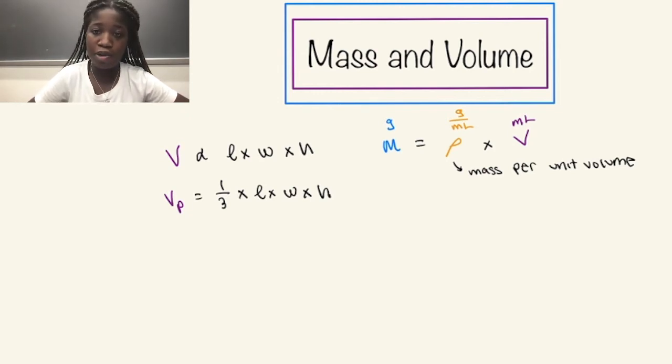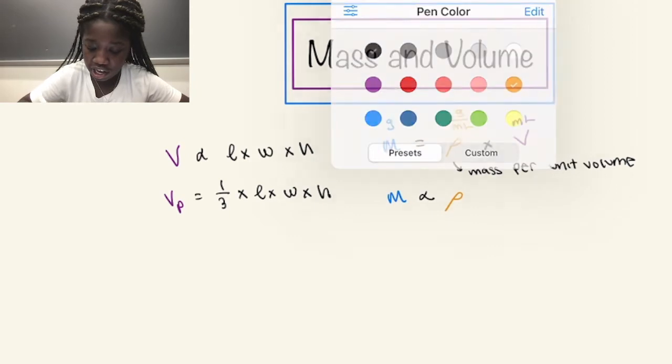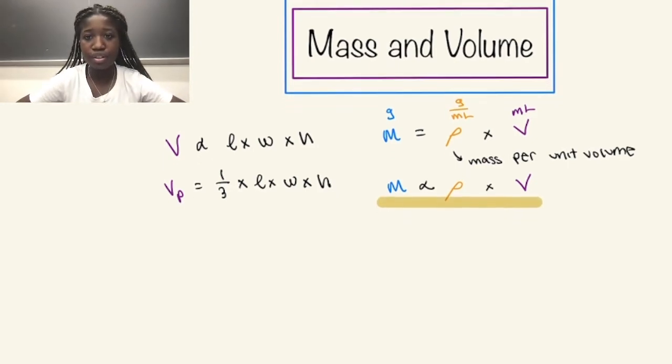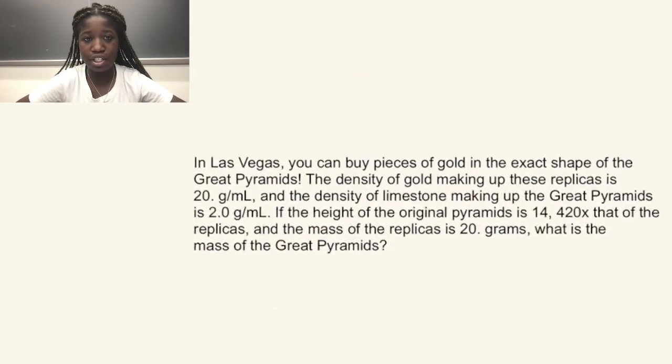Now mass and volume are directly proportional, so if you double the mass you can double the volume. This is the same for mass and density. Doubling the density is doubling the mass, and so you can create a proportionality expression from this. So mass is proportional to density times the volume. This is the equation that we will be using to solve our problem. So let's go to it.